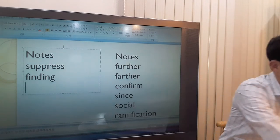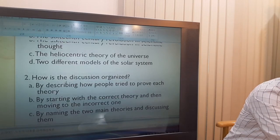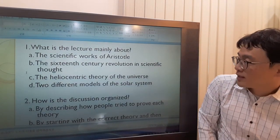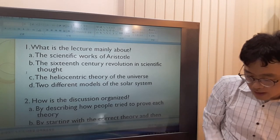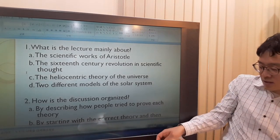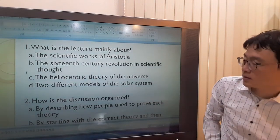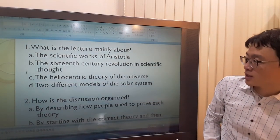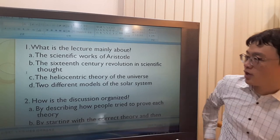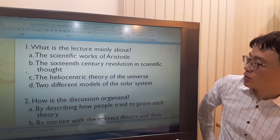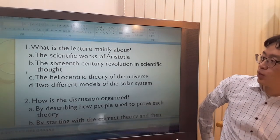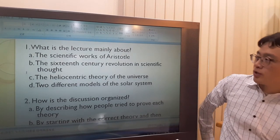Let's look at the questions. What is the lecture mainly about? Well, it's about the two models which explains the movement of the Sun and the Earth and the other planets. So what's the answer? Two different models of the solar system would be the answer. Let's look at other options. A - The scientific works of Aristotle. The professor mentioned Aristotle, but not his scientific works, and it's not the main topic anyway.